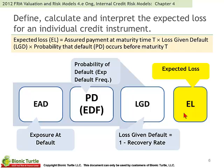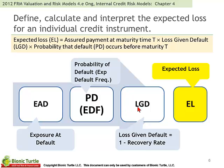The expected loss is really a product of three inputs: the exposure. And then in terms of percentages, we really just have a product of two variables: the probability of default and the loss given default. And if they are independent, then we're just going to multiply them.